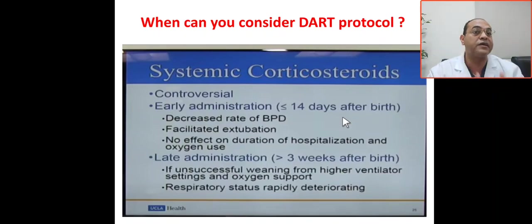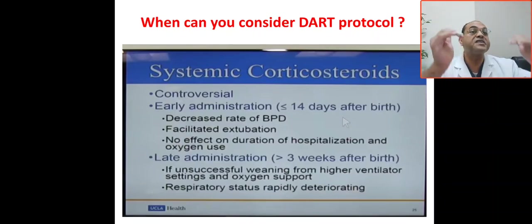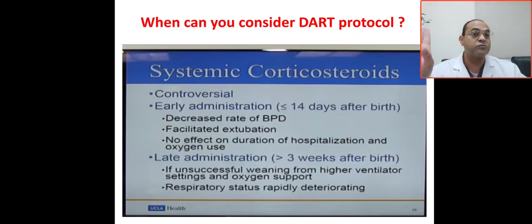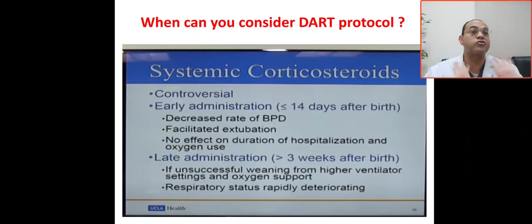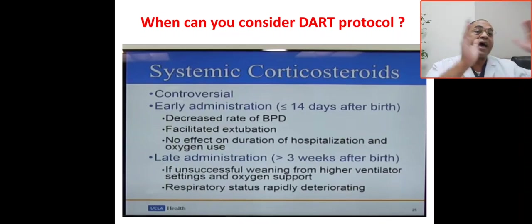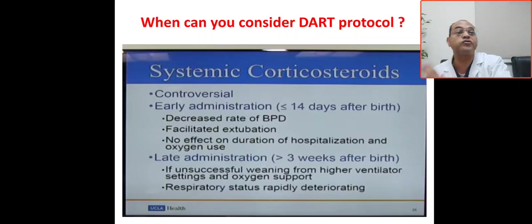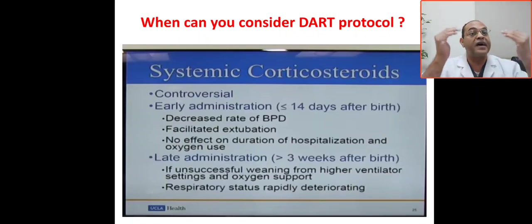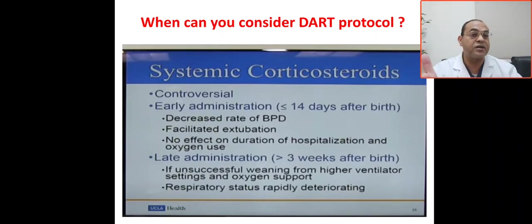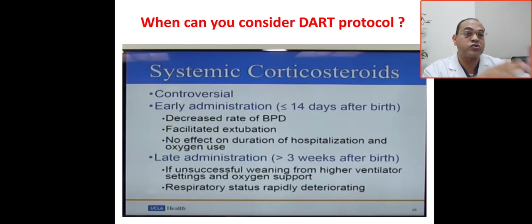What is the difference between early and late? The early, based on mortality and morbidity, will decrease mortality and decrease the incidence of BPD. The late will not decrease mortality — it will decrease or reduce chronic lung disease, but not increase survival. The early administration, less than 14 days after birth, gives four degrees rate of BPD reduction and facilitates extubation, but will not affect the duration of hospitalization and oxygen use.